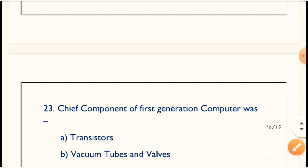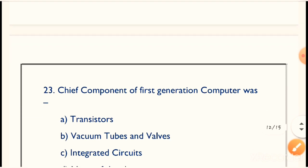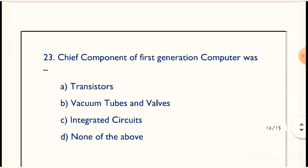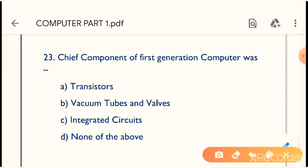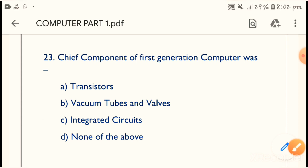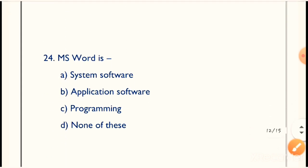Question 23: Chief component of first generation computer is what? Option B is the correct answer — Vacuum Tubes and Valves is the chief component of first generation computer. Very very important question.